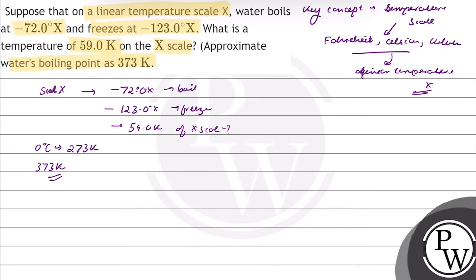So, this will be equal to 100 by 51, equal to 214 upon -123 minus 72. This equals 214 upon -123 minus temperature. This will be equal to -123 minus temperature equal to 214 into 51 upon 100.